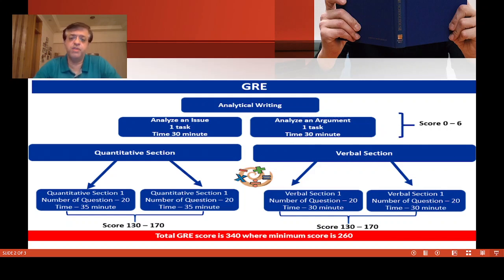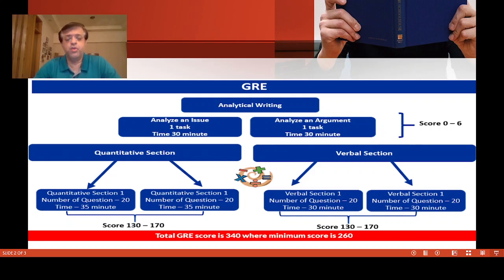The other essay is called Analysis of an Argument essay, for which you are also given 30 minutes. For each essay, two graders score your work — generally TAs working part-time at a university. Your score for each essay is the average from the two graders. If there is a difference of more than one point between the two graders, a third grader grades your essay. Your overall Analytical Writing score on the report is between 0 and 6, representing the average of the two essays, with 0 being the worst and 6 being the best.